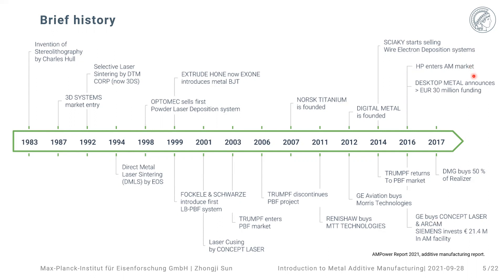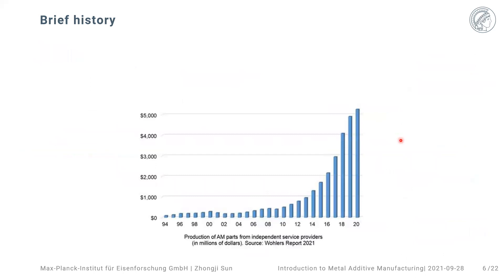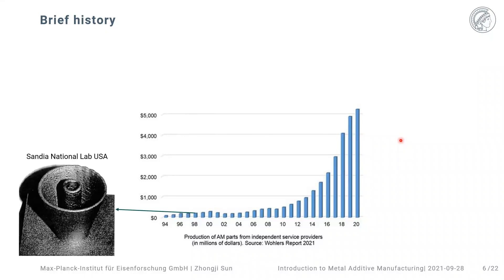Desktop Metal, developed by a few professors from MIT, also came into the picture. Around this time we can see a very rapid increase in monetary investment surrounding AM. At the very early stage, probably still called rapid prototyping or laser cladding, people in the US had already been experimenting with this technique, building parts in titanium — that's what early metal AM looked like in its infancy stage.